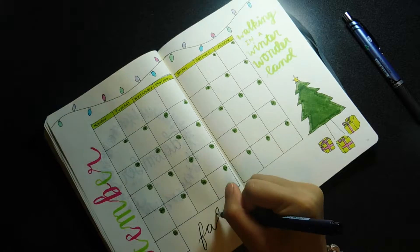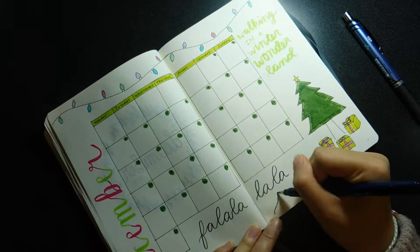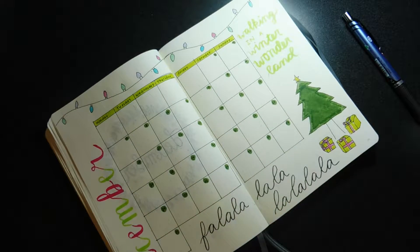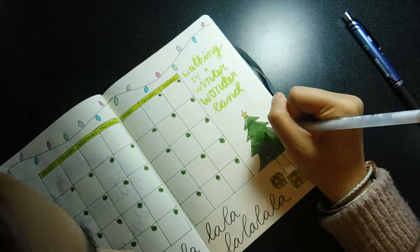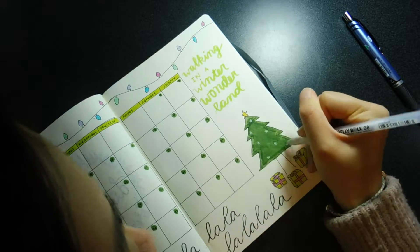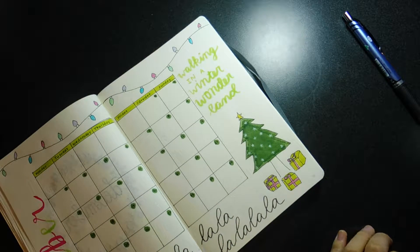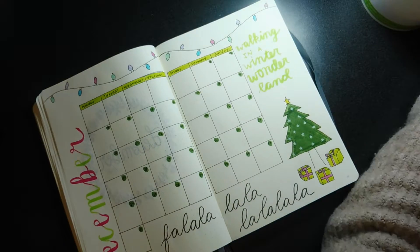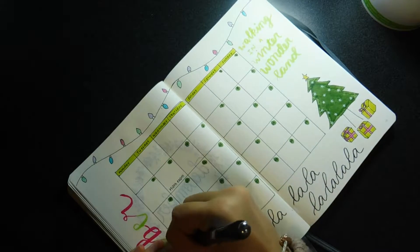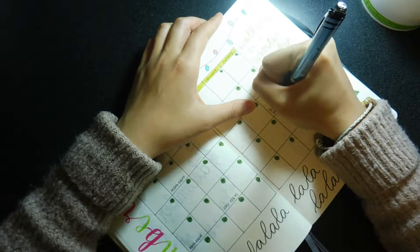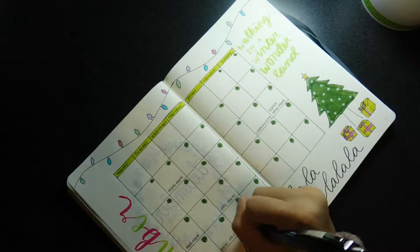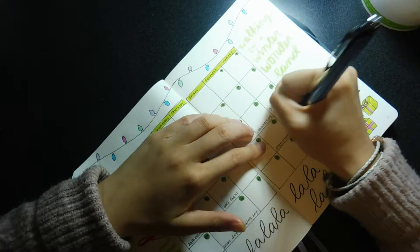I also used my Tombow Fudenosuke pen to write fa-la-la-la-la-la-la-la, like the end of the Deck the Halls song. I also used my white Sakura Jelly Roll to add in little snowflakes on the tree just because it was getting a little boring and I wanted some variation in color. Then I used my Pentel EnerGel pen to mark in the important dates of this month and all the times that I have exams.